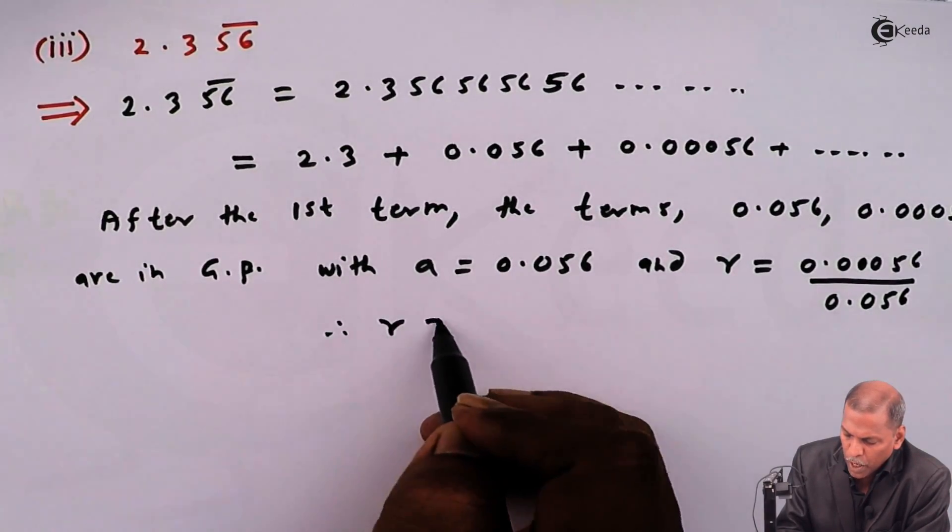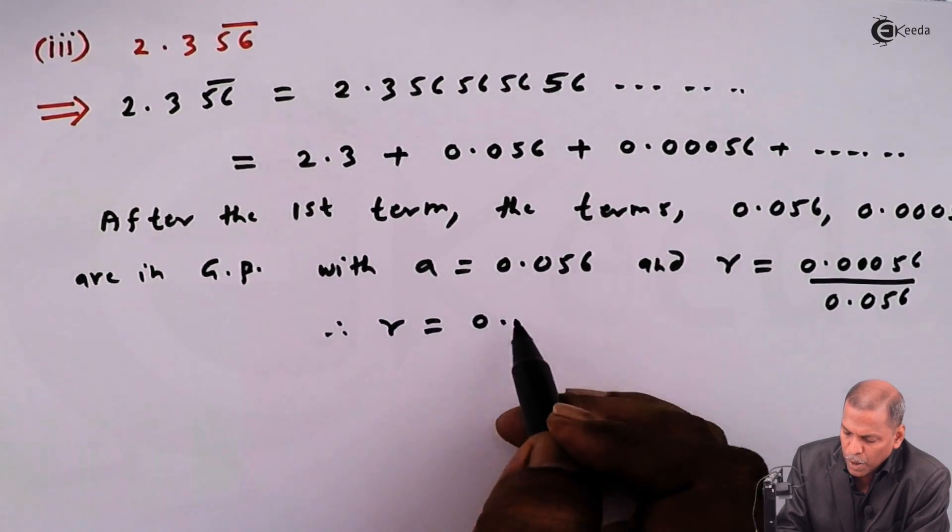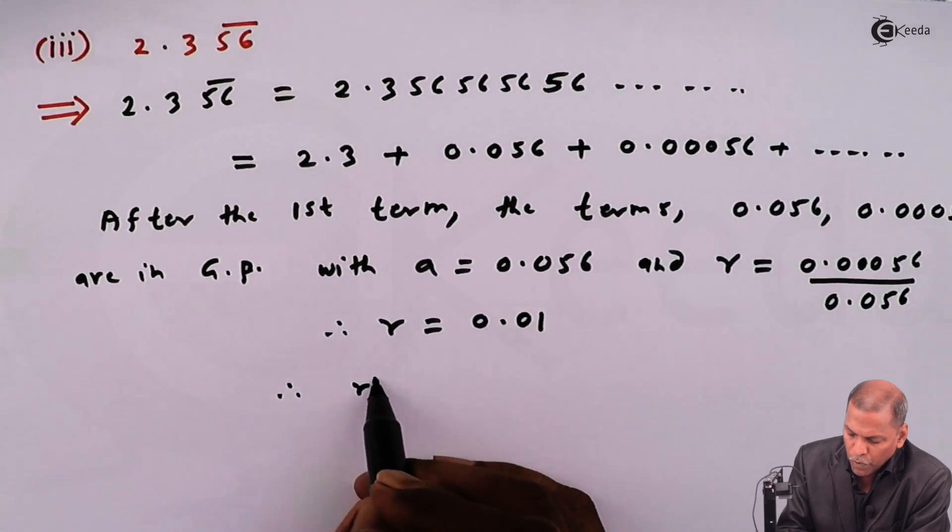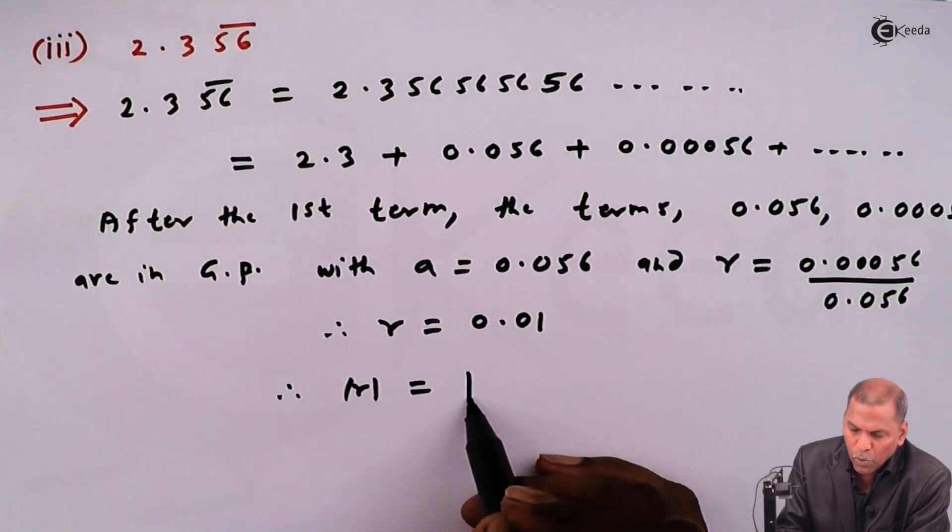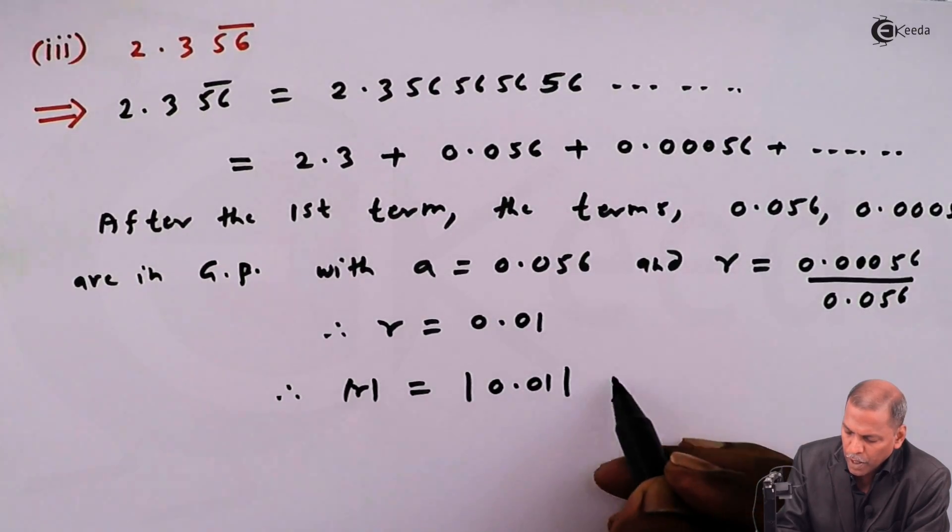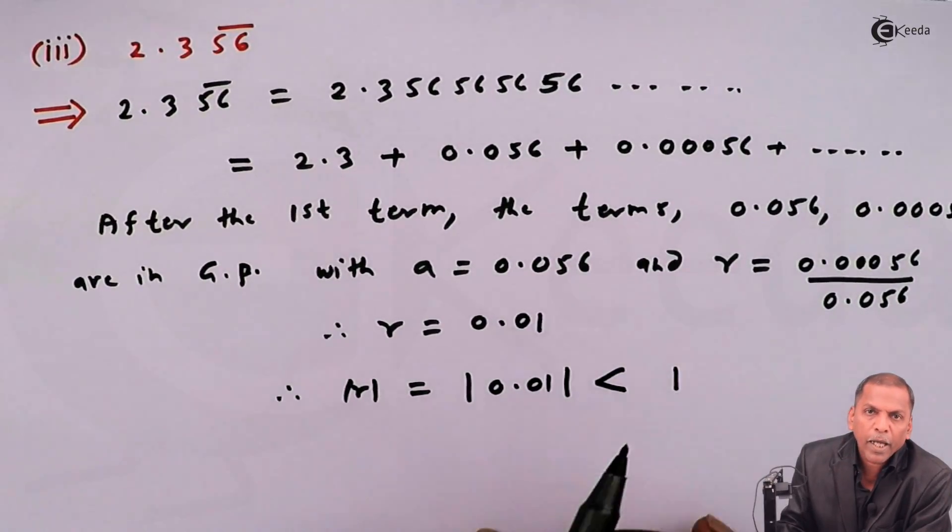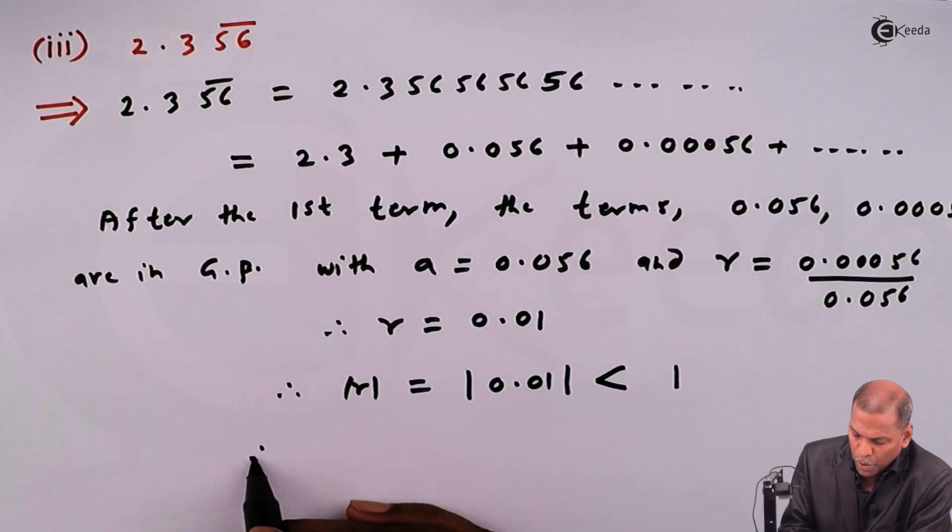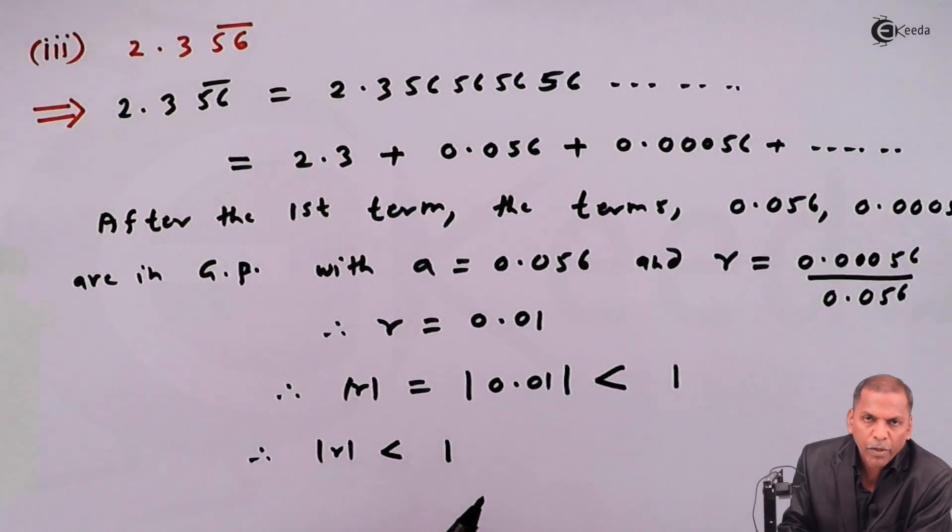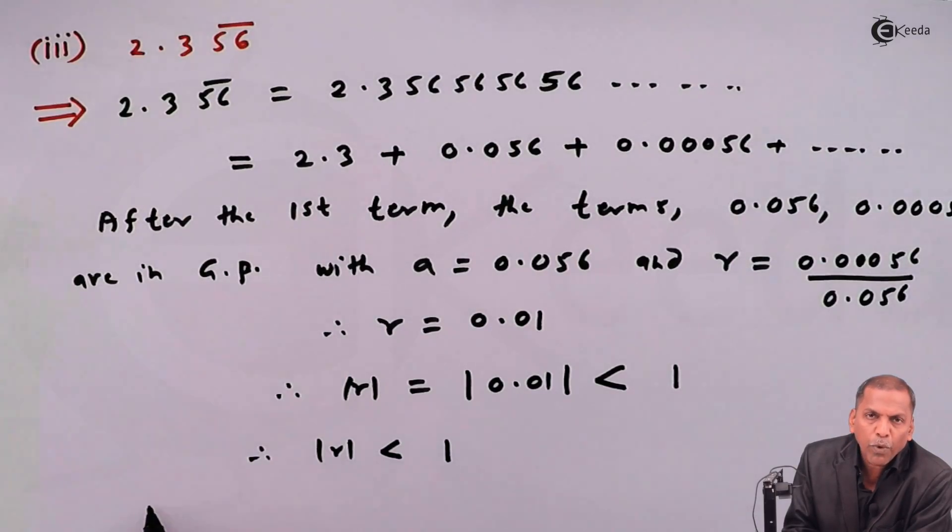Therefore r is equal to 0.01. Therefore modulus r is equal to modulus 0.01 and that is less than 1. So in this way modulus of r is less than 1, it means sum to infinity of a GP exists.